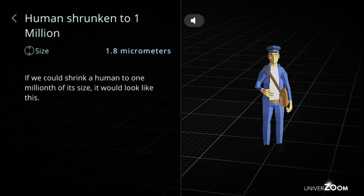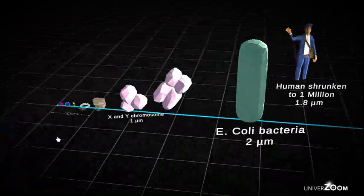Human shrunk to 1 million, size: 1.8 micrometers. If we could shrink a human to one millionth of its size, it would look like this.